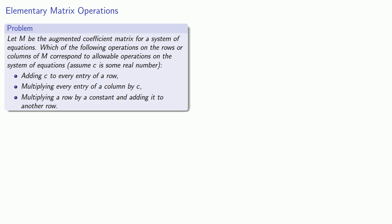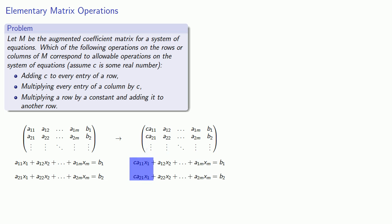Now suppose we multiply every entry in a column by a constant c. Since every row corresponds to an equation, and every column to the coefficients of one variable in the system of equations, this corresponds to multiplying all the coefficients of a given variable by c. But we can't do that in a system of equations, so this operation is forbidden.